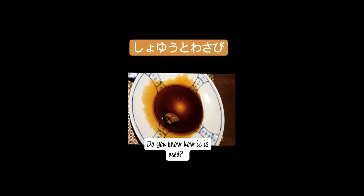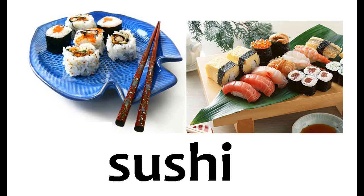Shoyu is basically a soy sauce, and mostly it is eaten with wasabi. Wasabi — we can say it's a kind of mustard paste and it has many other ingredients also, but for basic understanding you can understand it as mustard paste.